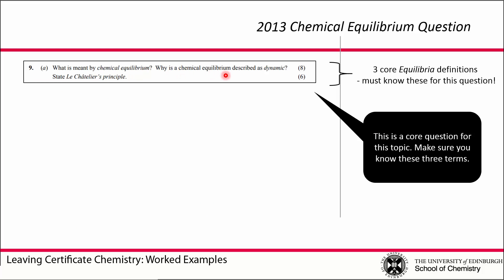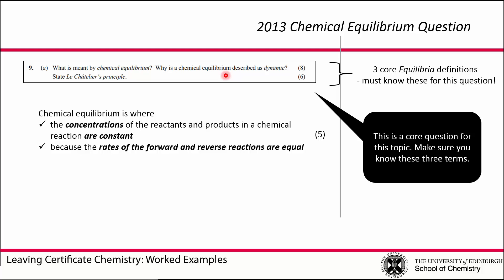These are things you should be able to roll out quite easily. Chemical equilibrium is where the concentrations of reactants and products in a chemical reaction are constant, because even though the reactants are still reacting and the products are still going back to revert to reactants, the rates of these forward and reverse reactions are equal. As products form, they also decompose back to reactants at the same rate, so the actual concentrations don't change. When we reach chemical equilibrium, the concentrations of the reactants and products are constant.